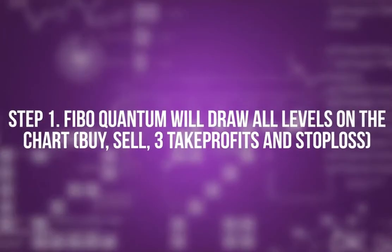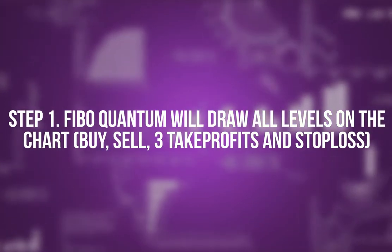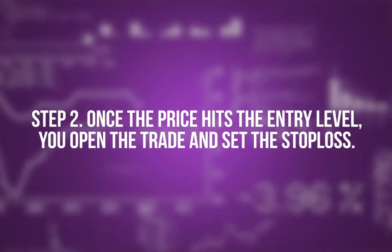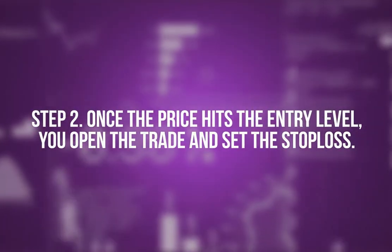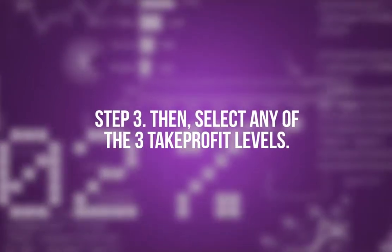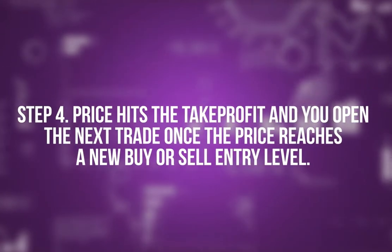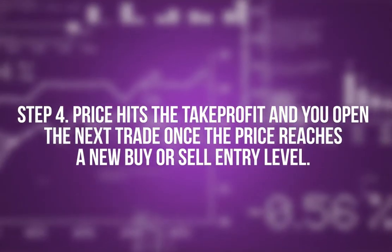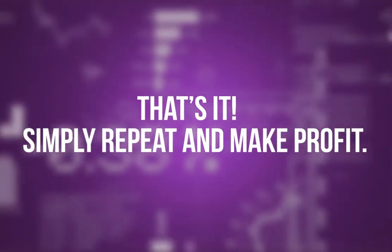Step 1. FiboQuantum will draw all levels on the chart. Buy, sell, free take profits and stop loss. Step 2. Once the price hits the entry level, you open the trade and set the stop loss. Step 3. Then, select any of the three take profit levels. Step 4. Price hits the take profit and you open the next trade once the price reaches a new buy or sell entry level. That's it. Simply repeat and make profit.